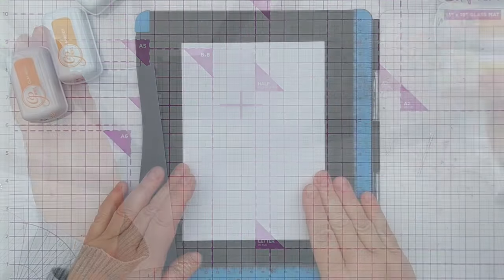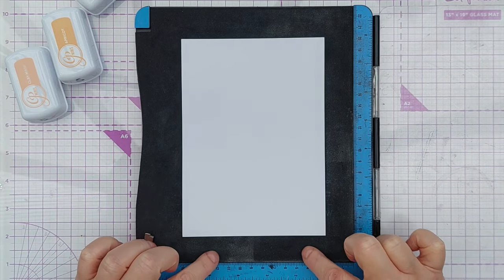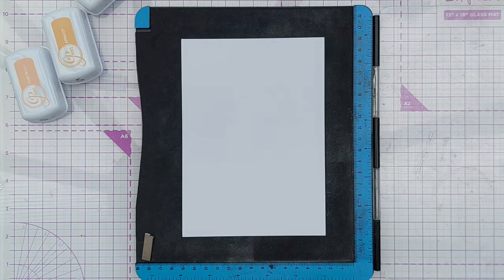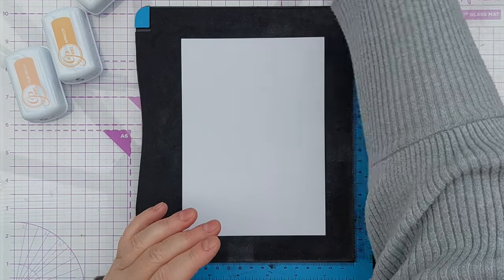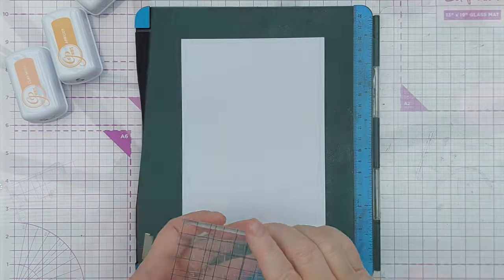I'm going to use my stamp positioner because it's got a foam pad in it with a bit of give which means I can get a decent impression when I press down, but I'm not going to use the door. It'll just be quicker and easier to use an acrylic block.